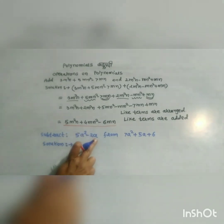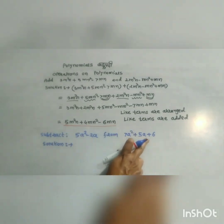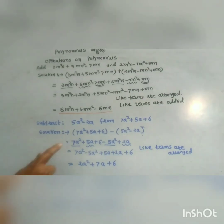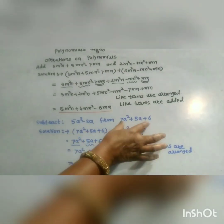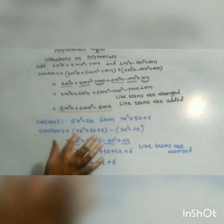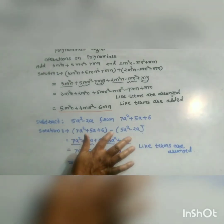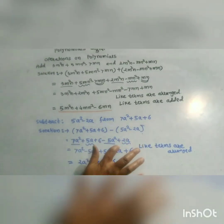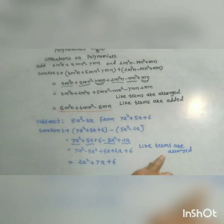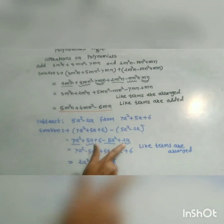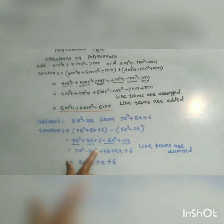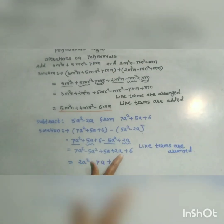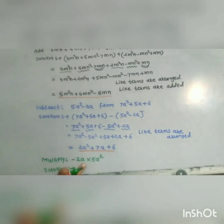Subtract 5a squared minus 2a from 2a squared plus 5a plus 6. Therefore: 7a squared plus 5a plus 6 minus 5a squared minus 2a. Arranging like terms: 7a squared minus 5a squared equals 2a squared; 5a plus 2a equals 7a; and plus 6. So the result is 2a squared plus 7a plus 6.